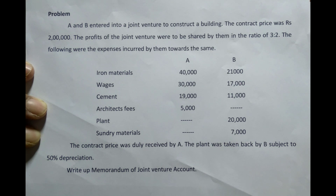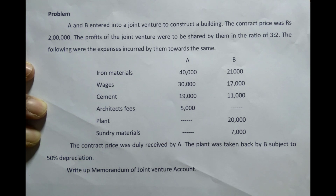Iron material: A provided Rs. 40,000 and B provided Rs. 21,000. Wages paid by A: Rs. 30,000 and B: Rs. 17,000. Cement provided by A: Rs. 19,000 and B: Rs. 11,000. Architect fees paid by A: Rs. 5,000.